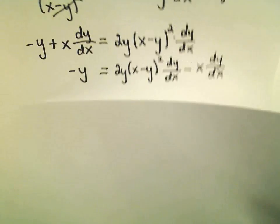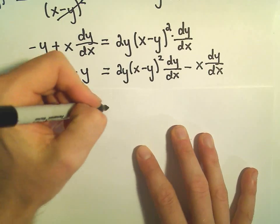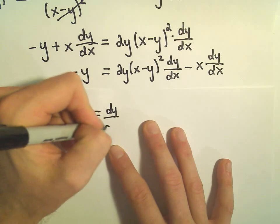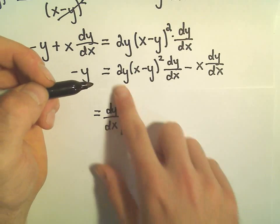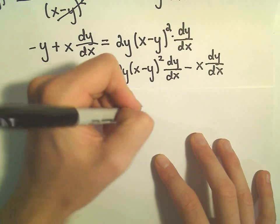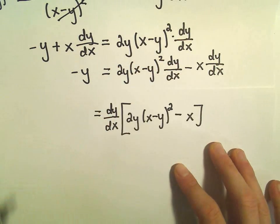And now we're almost there. All we have to do on the right side is just factor out that dy dx. So if we factor out the dy over dx, in the brackets, we would be left with the 2y times x minus y squared, and then minus x.